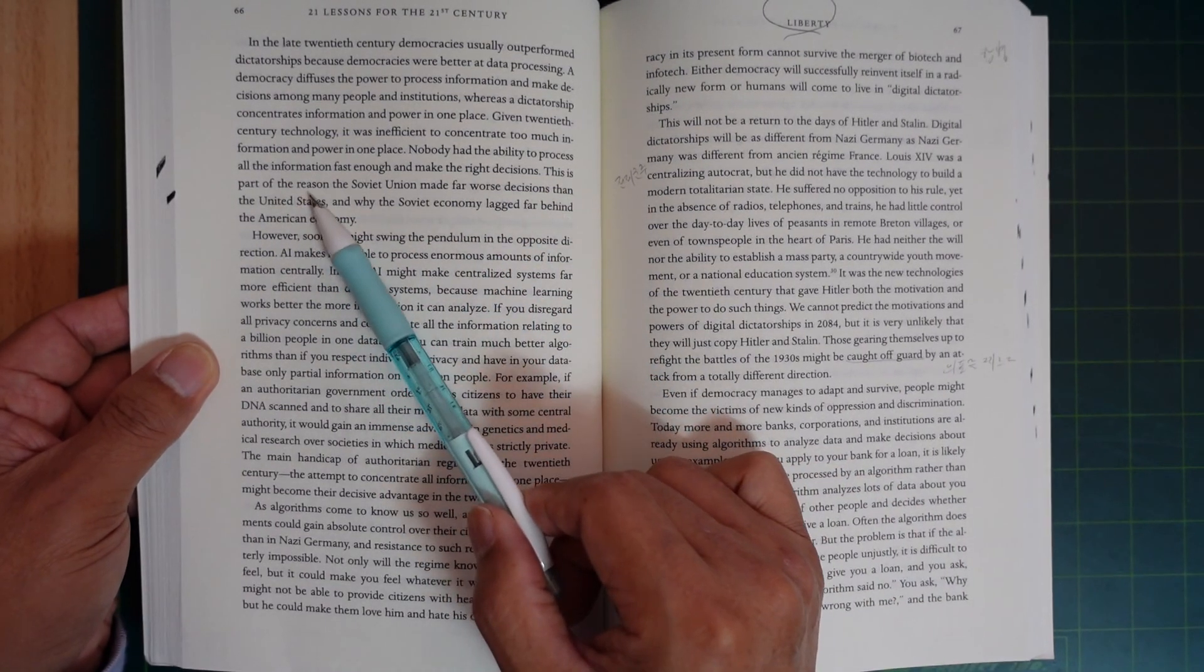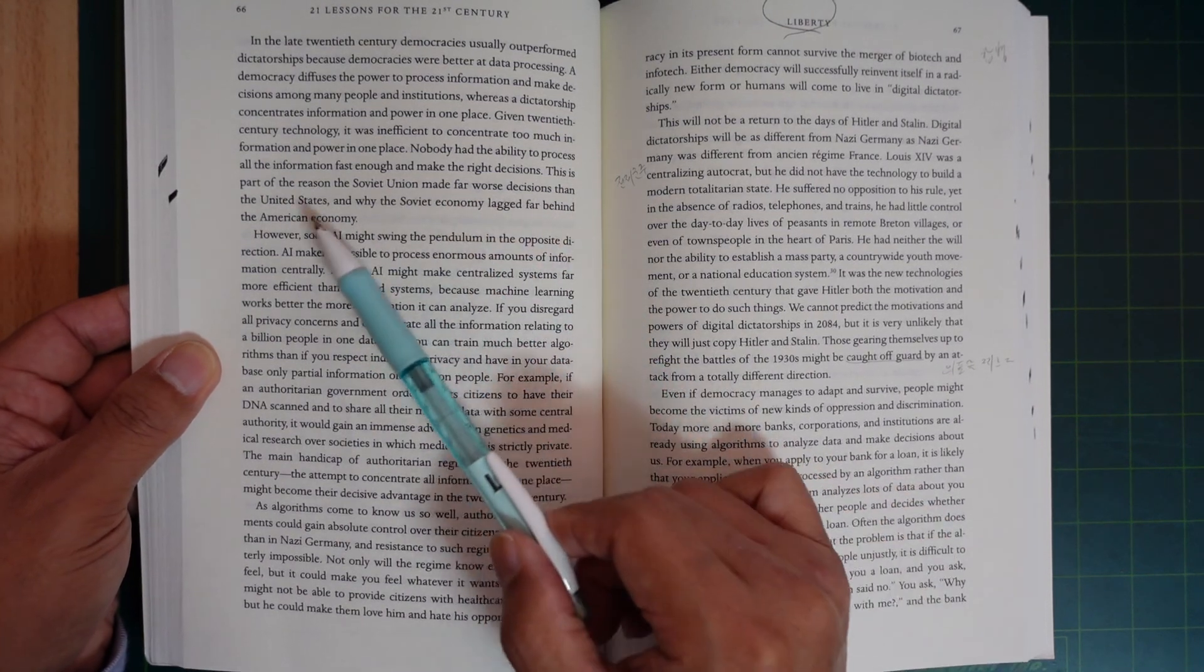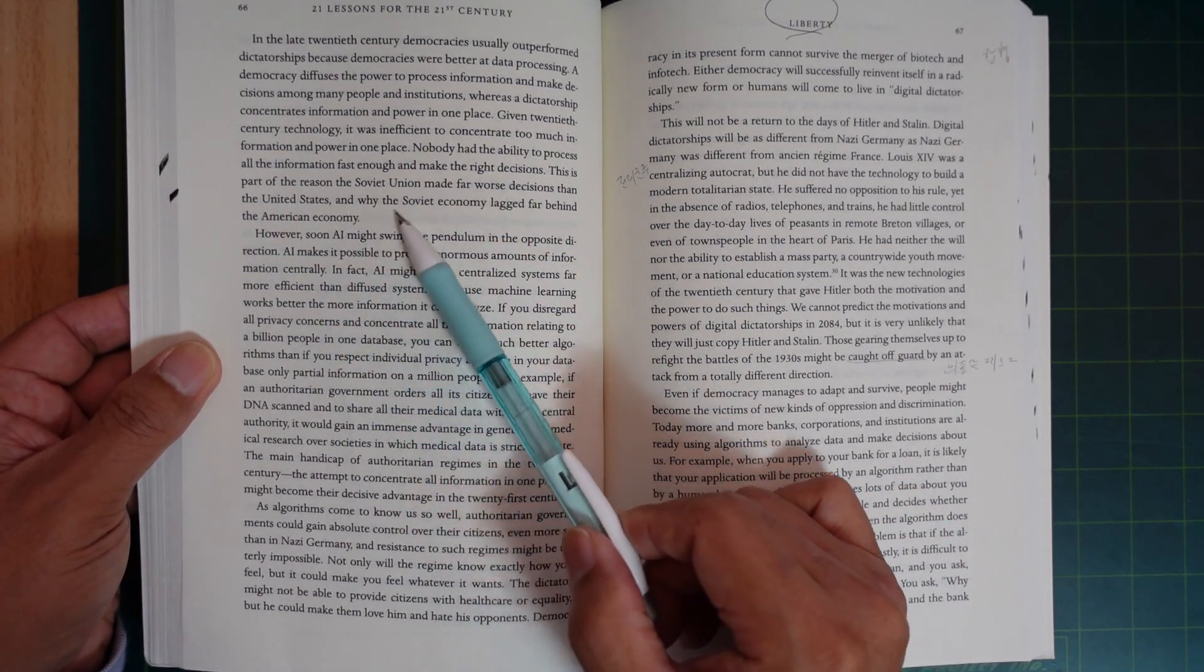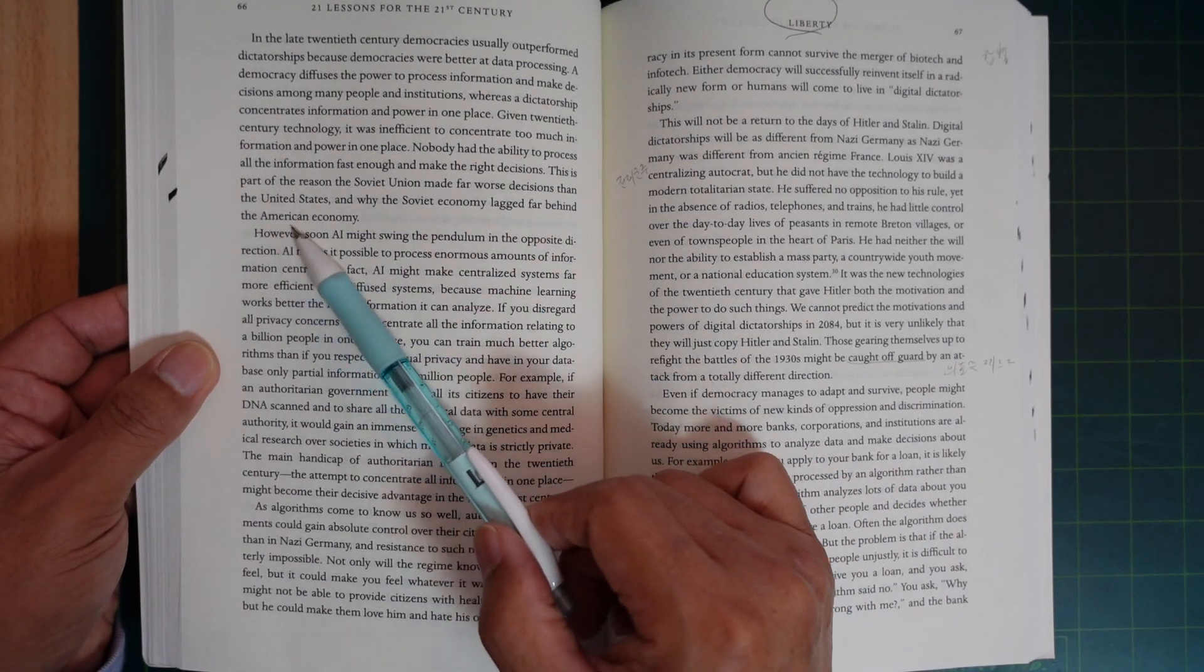Nobody had the ability to process all information fast enough and make the right decisions. This is part of the reason the Soviet Union made far worse decisions than the United States, and why the Soviet economy lagged far behind the American economy.